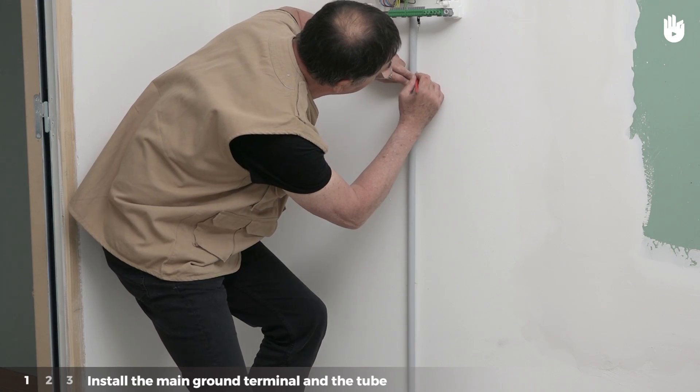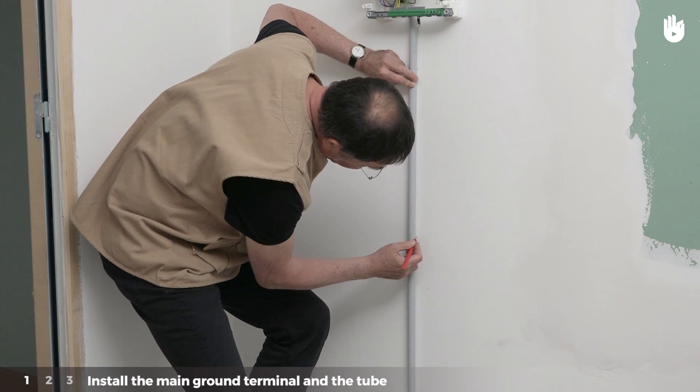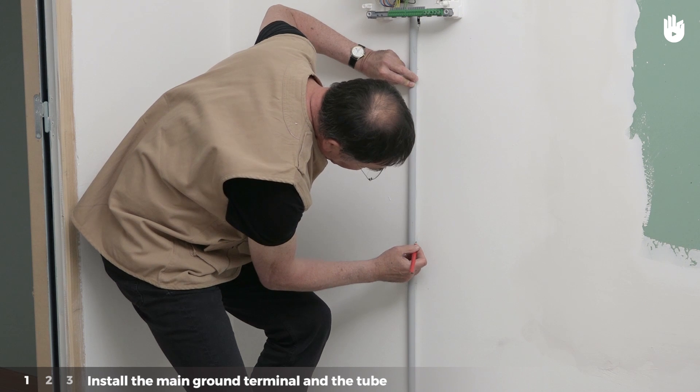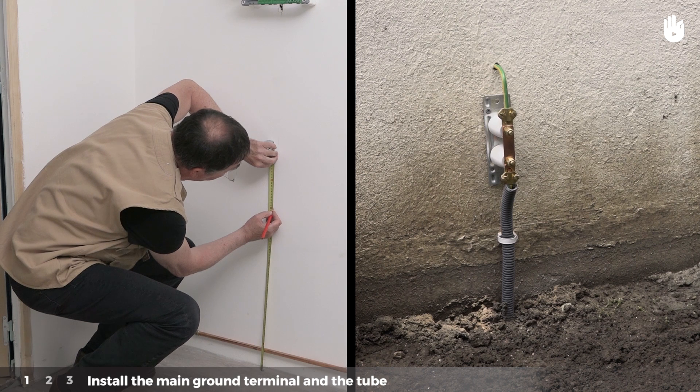Note and mark with the pencil the position of the mounting brackets above and below the tube at most every 80cm. Opposite the disconnecting strip and under the electrical panel, note the location of the main ground terminal.